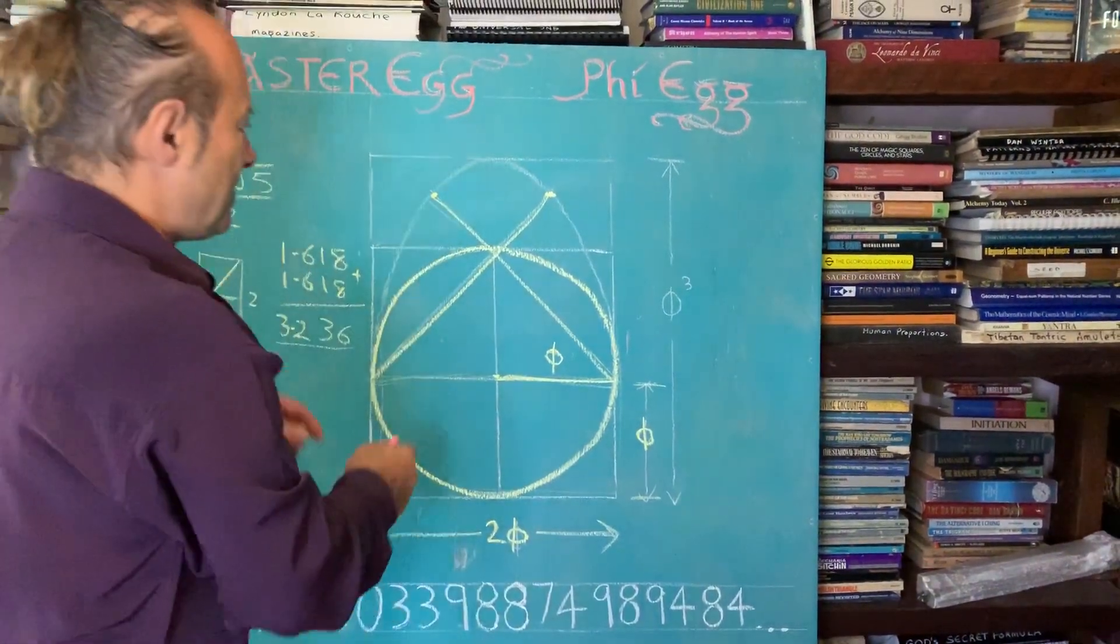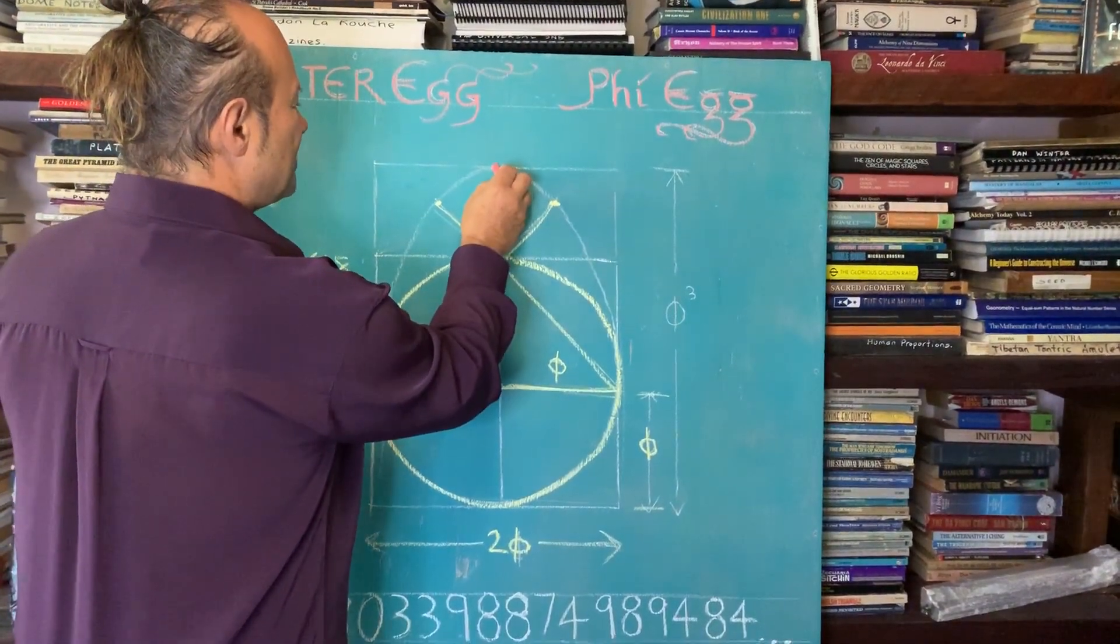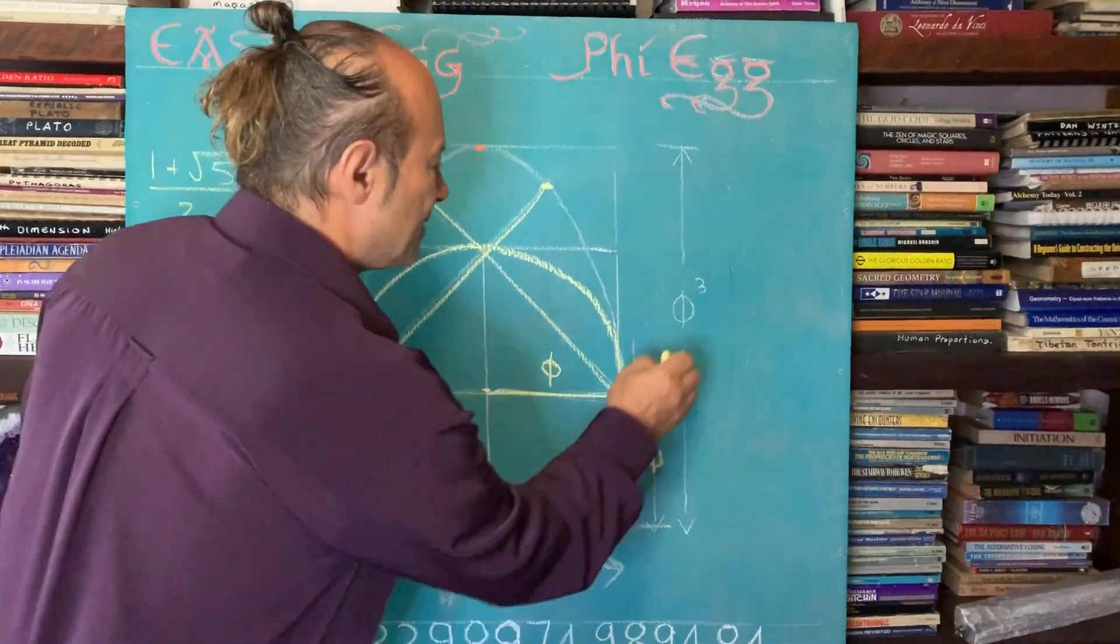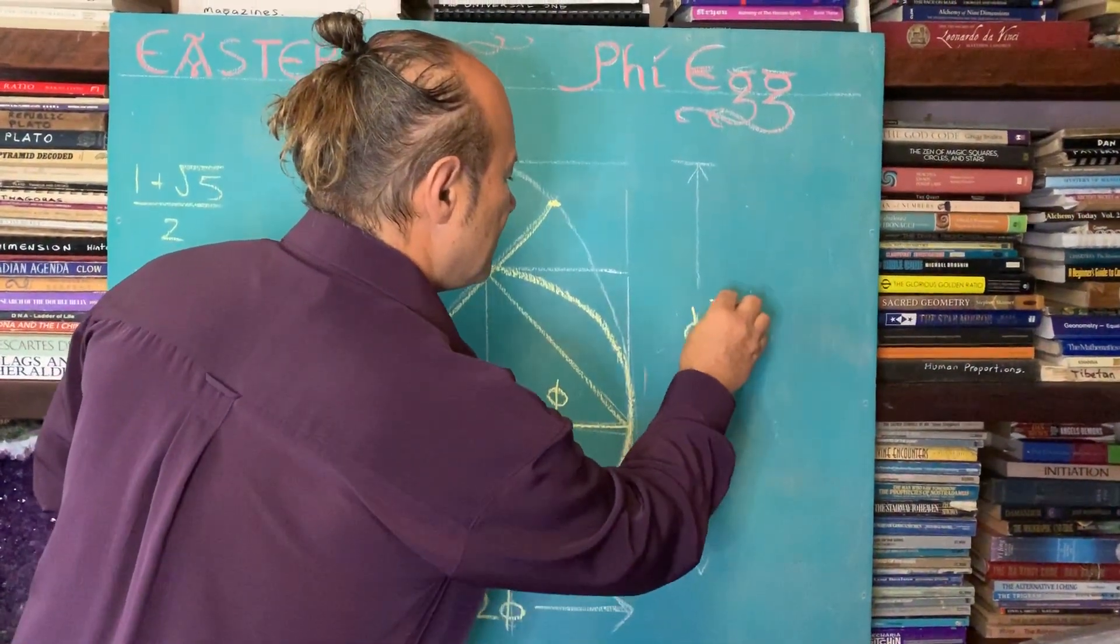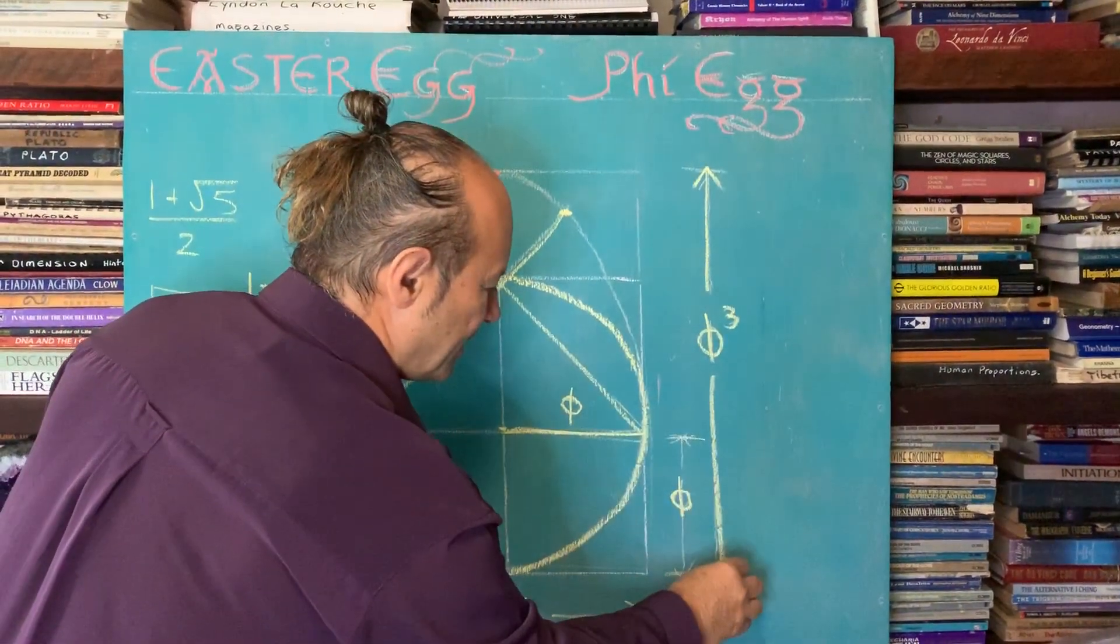And now that gives me enough information to get this point here, which is called Phi cubed. So Phi cubed is the whole distance of the egg.